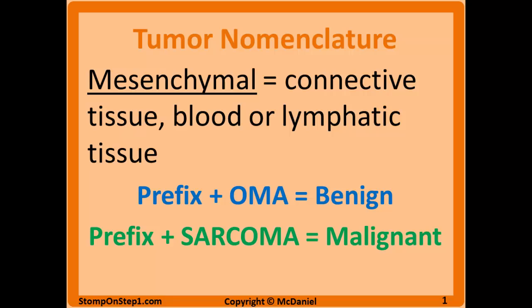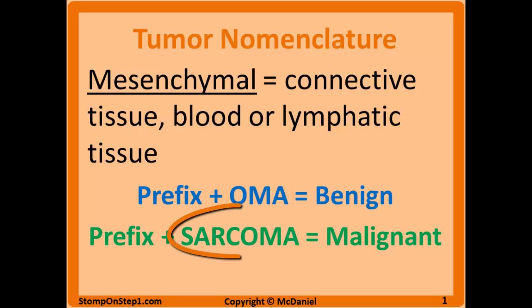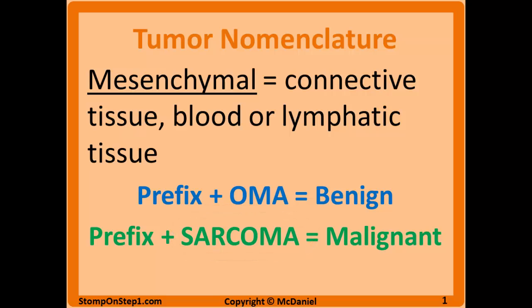The prefix plus -oma means it's benign. The prefix plus -sarcoma means that it is malignant. There are some cancers that do not follow the rules, and these include leukemias — cancer of blood cells — and lymphomas. These are both always malignant, so they do not follow the same pattern.